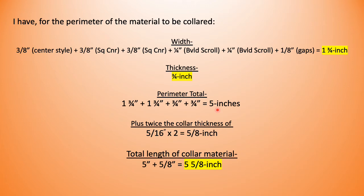So I need to work out twice the collar thickness. I said my average collar thickness was five sixteenths of an inch. I'm going to multiply that by two to get five eighths of an inch. Adding that together, I've got the perimeter of the stock to be collared plus twice the thickness of my collaring material. And I get that to be five and five eighths of an inch. In reality, five and nine sixteenths worked for me. Five and five eighths was just a little heavy.